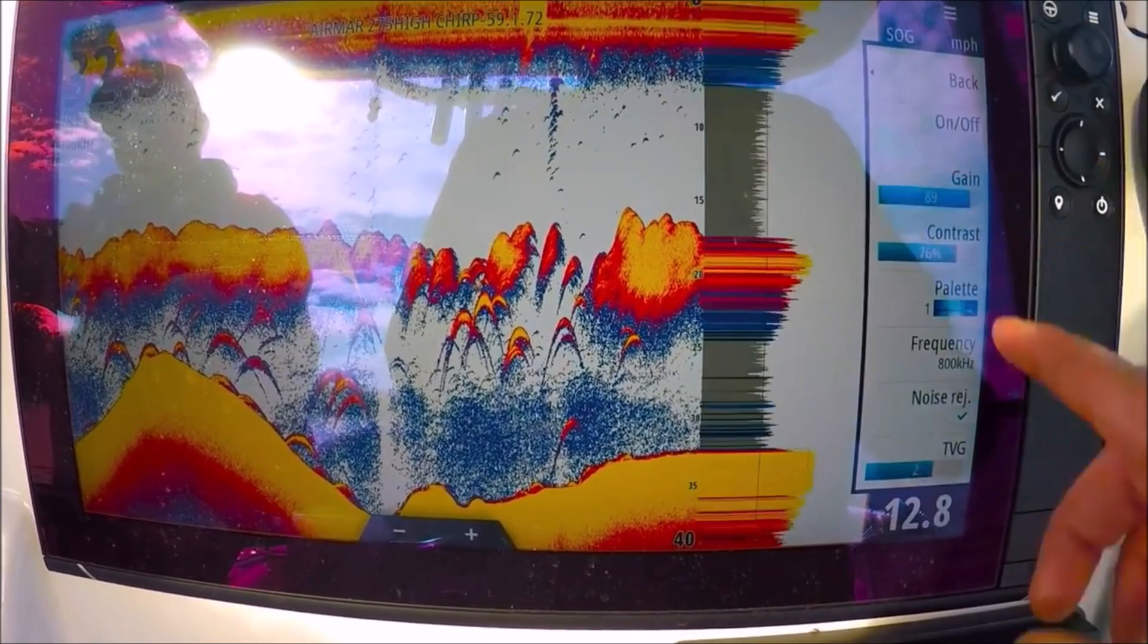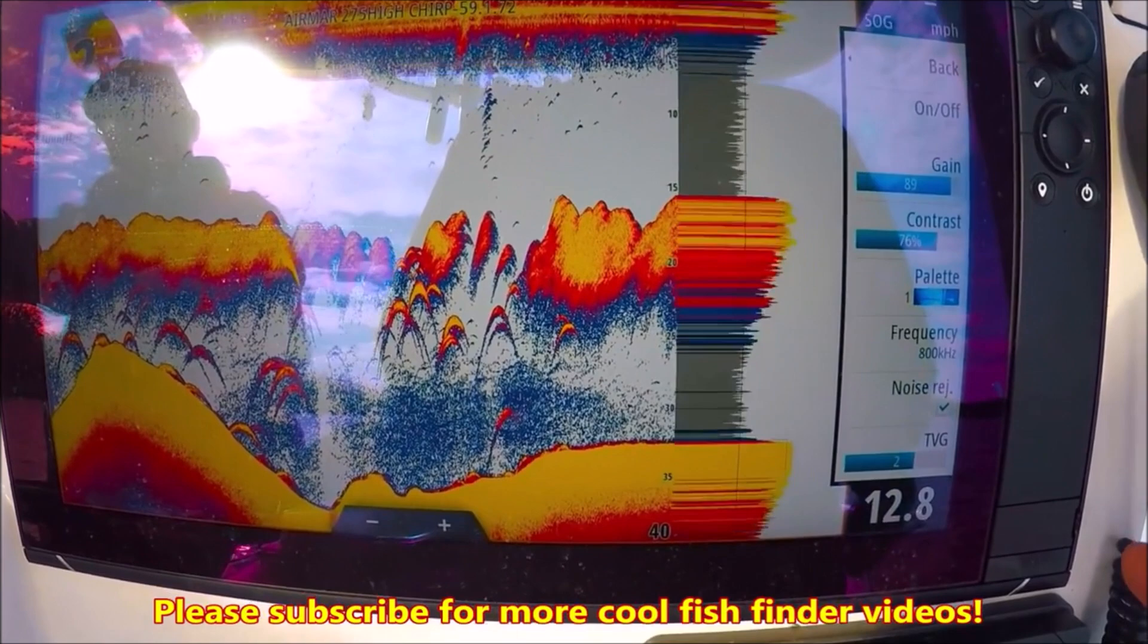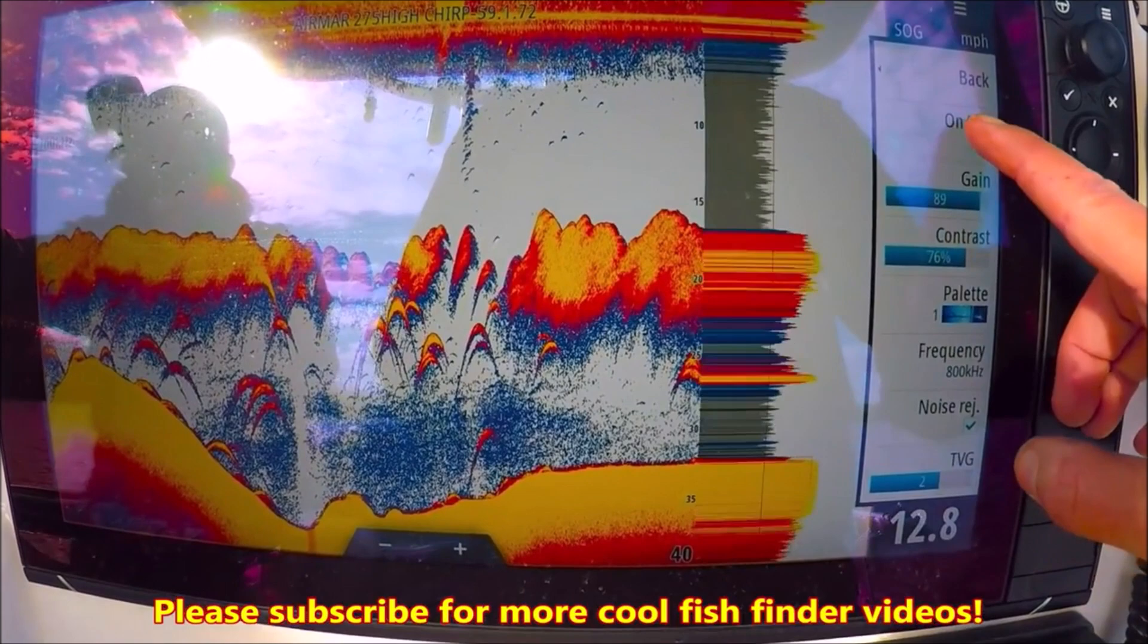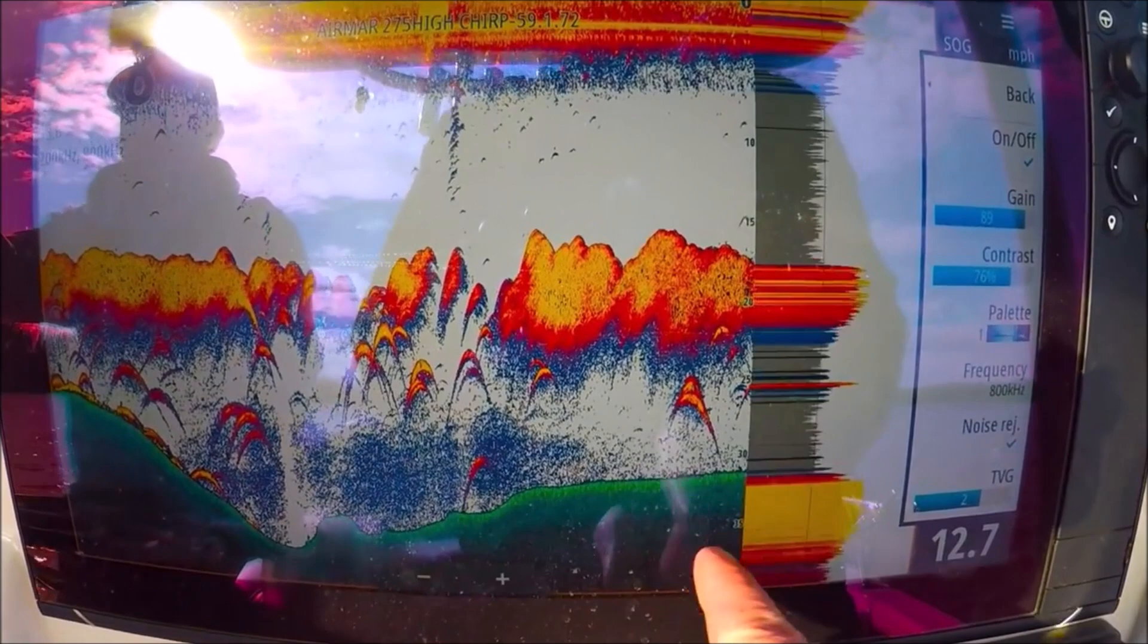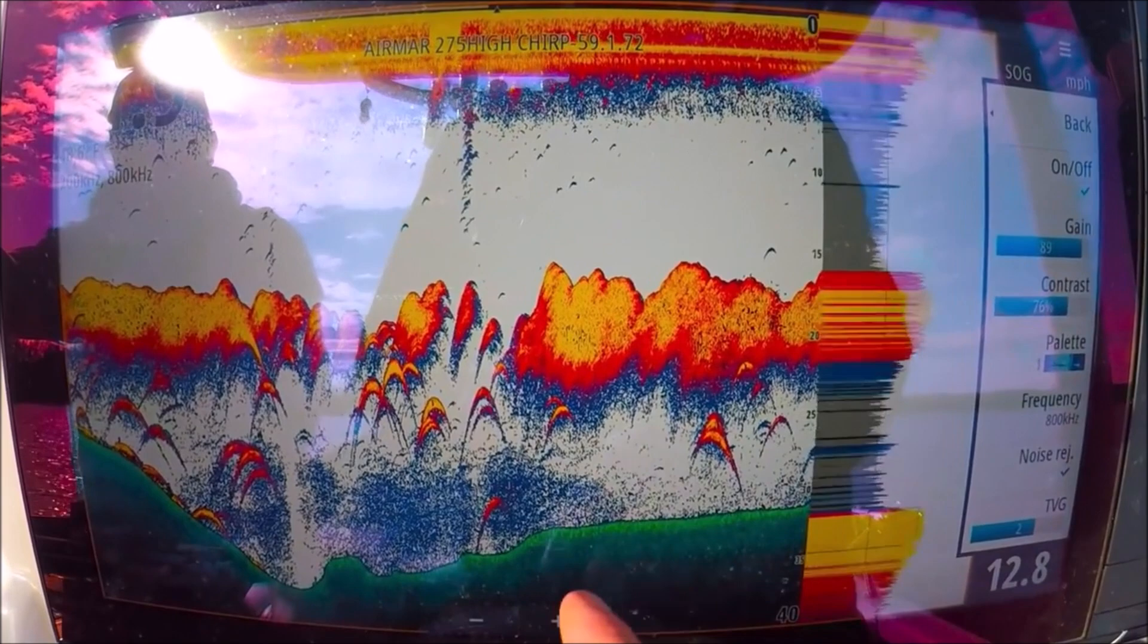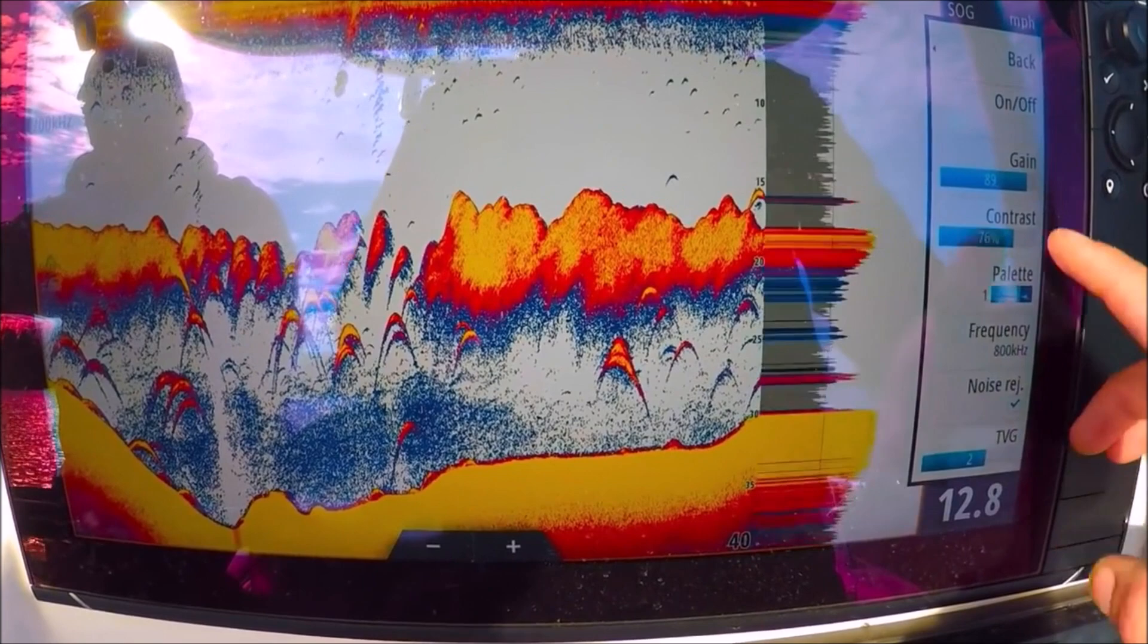We have our down scan overlay. This will take our down scan sonar and lay it on top of our palette here in our 2D sonar. But to be honest, with the new fish reveal, it kind of takes this feature away. So you can turn it on so you can see. There's our down scan on the bottom with our fish returns, baitfish, good hard returns, with our down scan on the bottom. Let's go back.